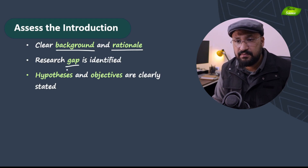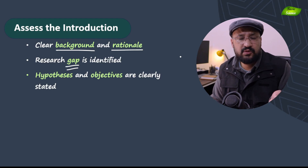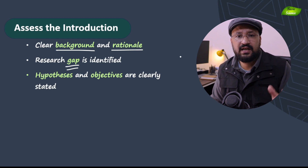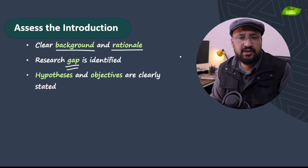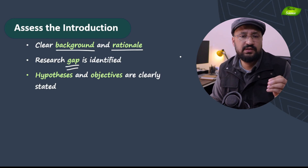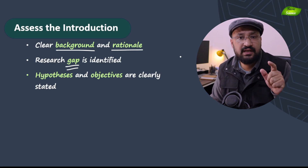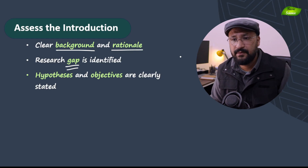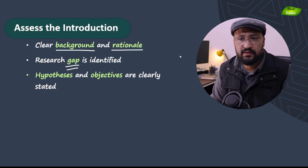Research gap means why the research was done to answer a specific question that is not yet known. As a reviewer, it's your responsibility to find out if there is any research already published that should be cited. Sometimes authors try to hide studies that are very similar to their own. If reviewers find that, they will say that a similar study has been published in journal XYZ. So it's very important that as a reviewer you also dig out papers and search to make sure there are no similar articles in the literature. If there are, you need to mention that the authors should either cite them or explain what the difference is.